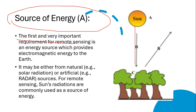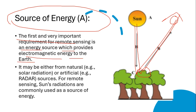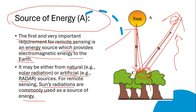The first step is source of energy. Whenever you want to capture something in a camera you need an energy source so that it can provide light to the object, and with that light you can capture information in the satellite camera. An energy source provides electromagnetic energy to the earth — that can be the sun. This energy source can be natural or artificial; natural energy source is solar radiation and artificial energy source is radar. For remote sensing, the sun's radiation is commonly used.